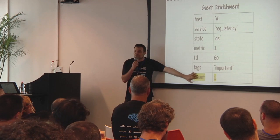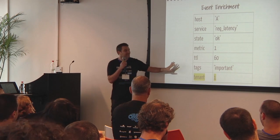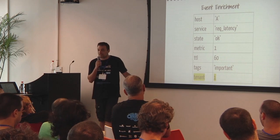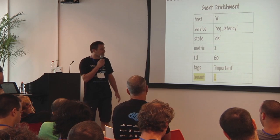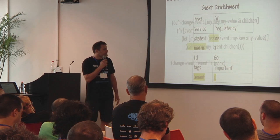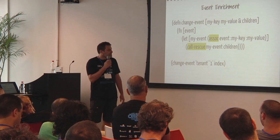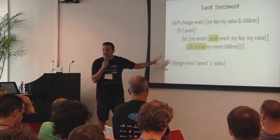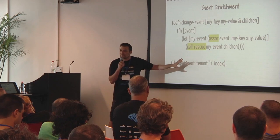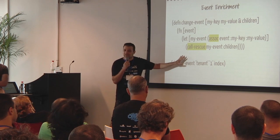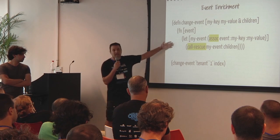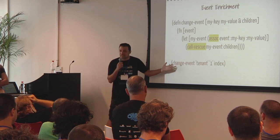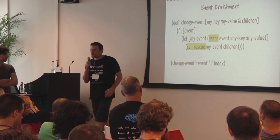We just want to add a new key-value pair to the event — that's it. You have a good reason to do it, and you can do it in any other monitoring tool. Basically, everything Chuck Norris can do, Riemann can do better and faster. You can do any custom function you want that does basically anything, as long as you know Clojure.